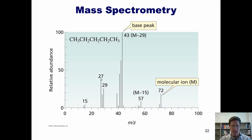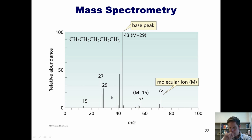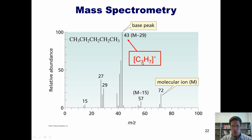Here's the mass spectrum for pentane. The molecular ion peak M, also called the parent peak, corresponds to 72 — the molecular weight of pentane. The M peak is not the tallest peak in this spectrum. The base peak at 43 corresponds to a radical propane fragment, C3H7. Apparently when pentane gets put into the mass spec, the most stable fragment that comes out is this propane fragment.